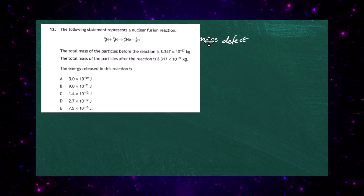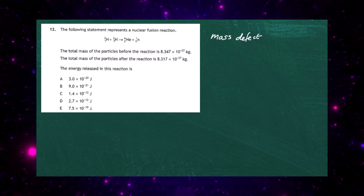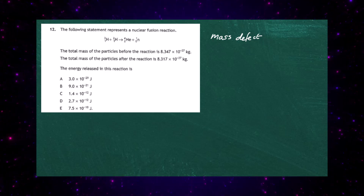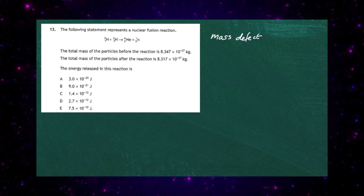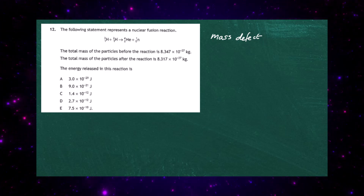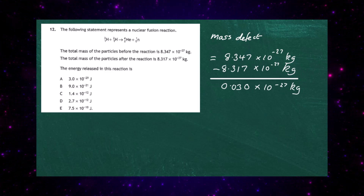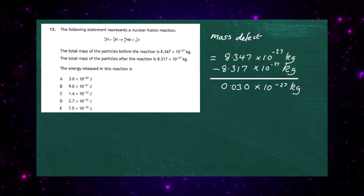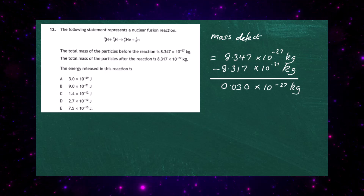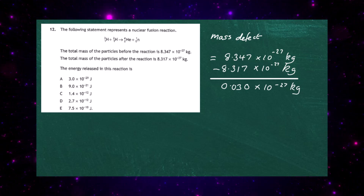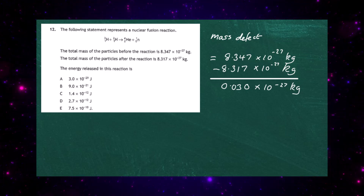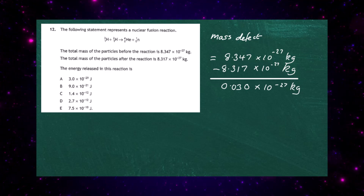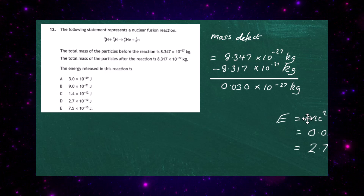According to Einstein's principle, the mass has been changed into energy in the reaction. We find the mass defect by subtracting the mass afterwards (8.317 × 10⁻²⁷ kg) from the mass before (8.347 × 10⁻²⁷ kg), leaving us with 0.030 × 10⁻²⁷ kg. To change that into energy, we use Einstein's famous equation E = mc².